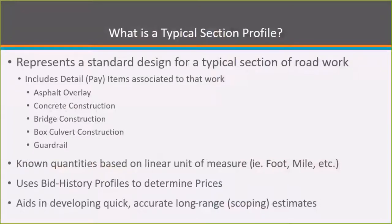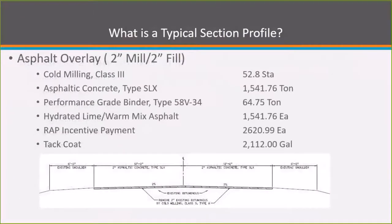Some examples of profiles that have been created include asphalt overlay construction, concrete bridge construction, box culvert construction, and guardrail. These profiles are created because the quantities are known and they're based on a linear unit of measure — either per foot or per mile. The profiles can use what's called the bid history profile to help determine prices based on previous bid data. These profiles help in developing quick, accurate, long-range or scoping type estimates.